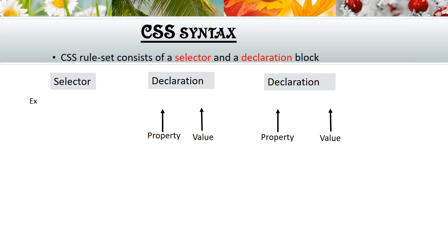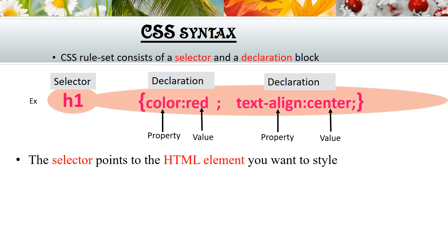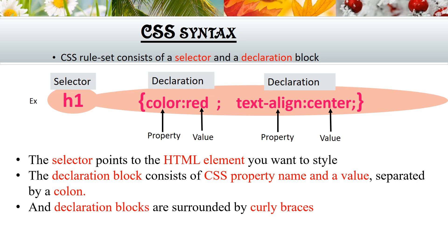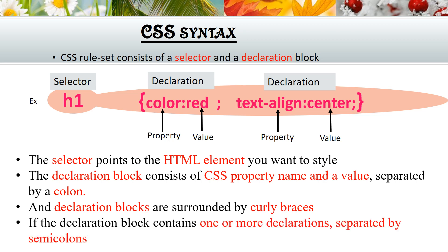Now let us look at CSS syntax. CSS is a rule-based language that applies styling to an HTML element or HTML tag. A CSS ruleset consists of a selector and a declaration block. The selector points to the HTML element you want to style. The declaration block contains CSS property names and values separated by a colon. Declaration blocks are surrounded by curly braces. If the declaration block contains one or more declarations, they should be separated by a semicolon.